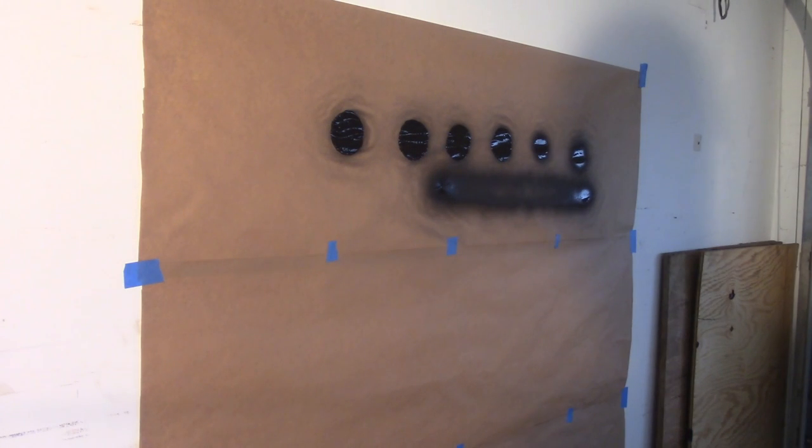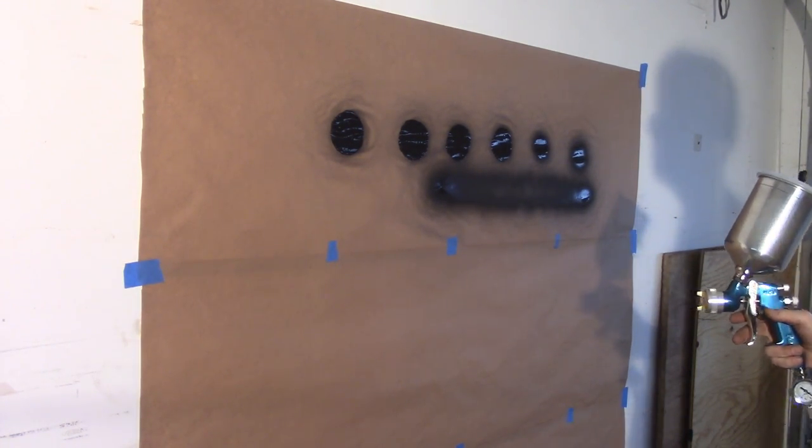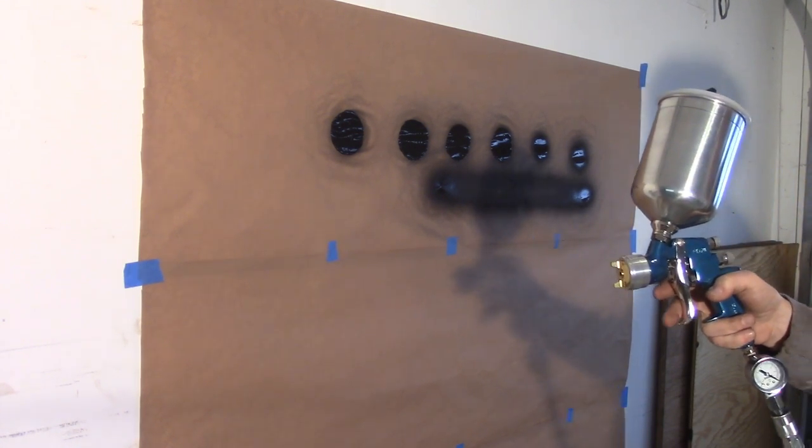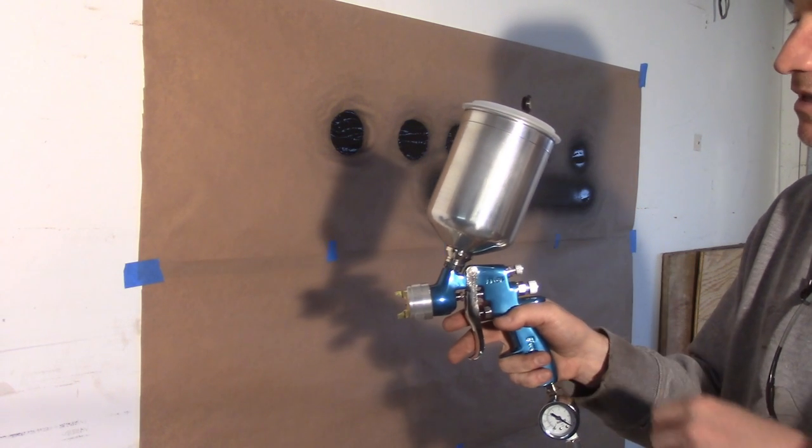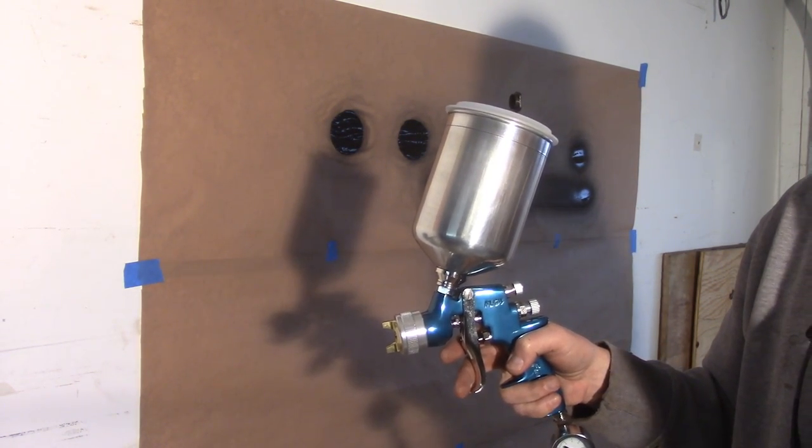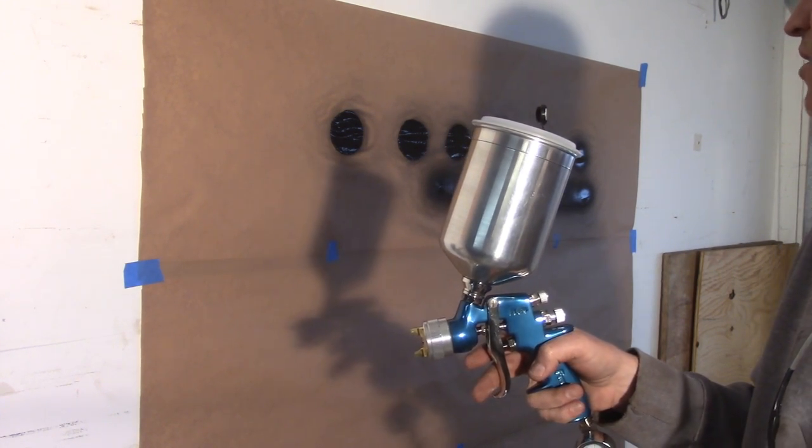All right everybody, as you can see, I've already started spray painting. I made the cardinal sin of thinking my camera was recording when it was not. So I want to show you, right now I got the black acrylic in here. I'll probably end up with about 6 to 8 ounces or so.